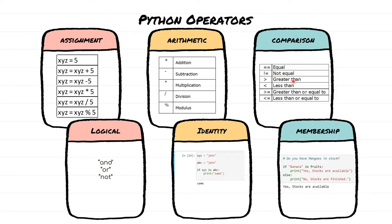Greater than and less than operators are used with arithmetic operations — for example, comparing the price of two products. We also have greater-than-or-equal-to and less-than-or-equal-to, which are self-explanatory. Greater than considers only values strictly greater than some value, while greater-than-or-equal-to considers values that are either greater than or equal to that value.